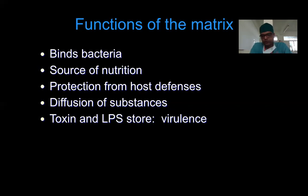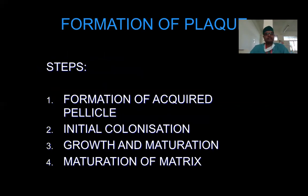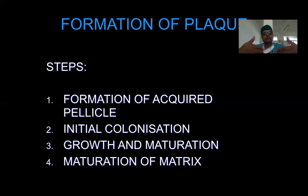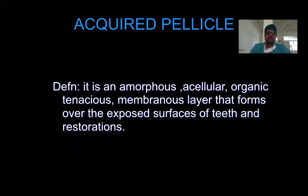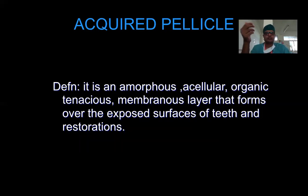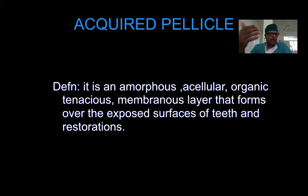Next, let's look at the various steps in the formation of plaque. There are primarily four steps. Please understand that all these steps happen simultaneously — we divide them for ease of understanding. The four steps are: first, formation of acquired pellicle; second, initial colonization of plaque; third, growth and maturation of plaque; and fourth, maturation of the matrix.